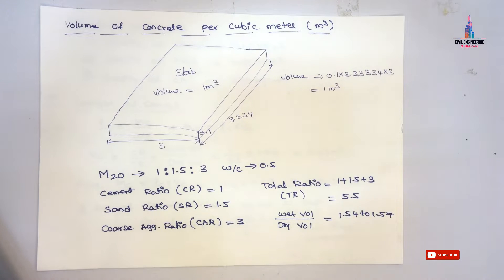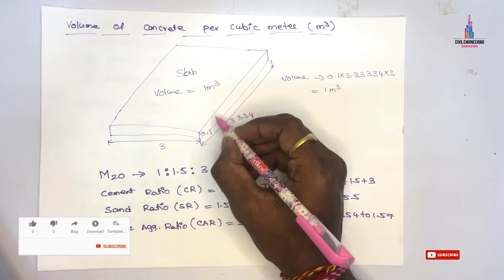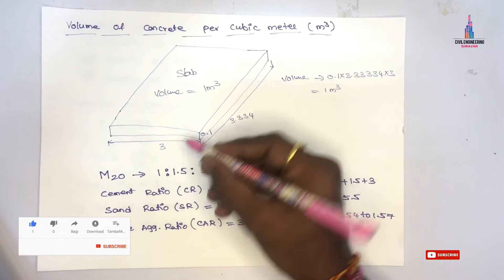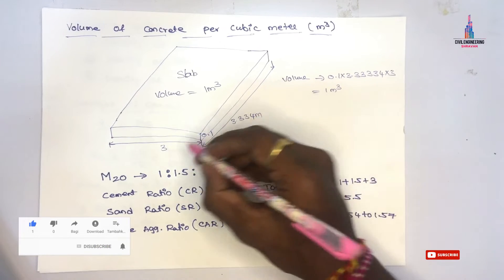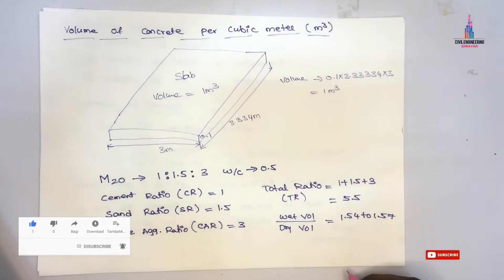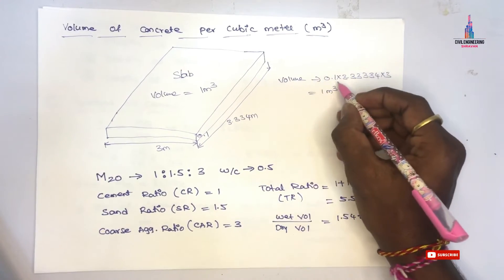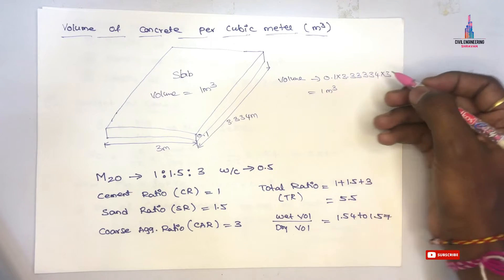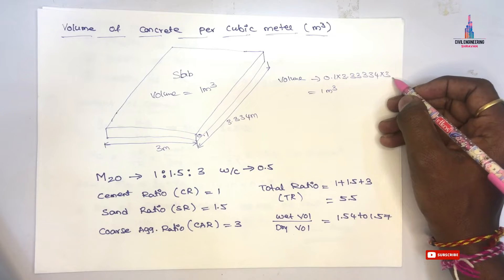In this video I will explain how to calculate the volume of concrete per cubic meter. This is one of the most important topics for civil engineers. For example, let us take a slab with dimensions of 0.1 meter thickness, 3 meter length, and 3.334 meter width. The volume of this slab equals 0.1 multiplied by 3.3334 multiplied by 3.